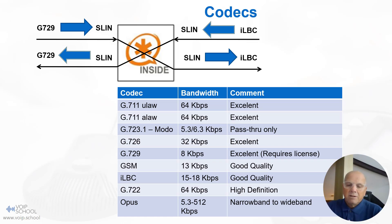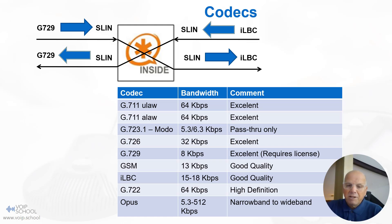The best thing you can do right now is go for high-definition codecs like G.722 and Opus. Opus is probably the best codec available today — developed by Google, it can encode from 5.3 to 512 kbps, from narrowband to wideband, and it's available on WebRTC.